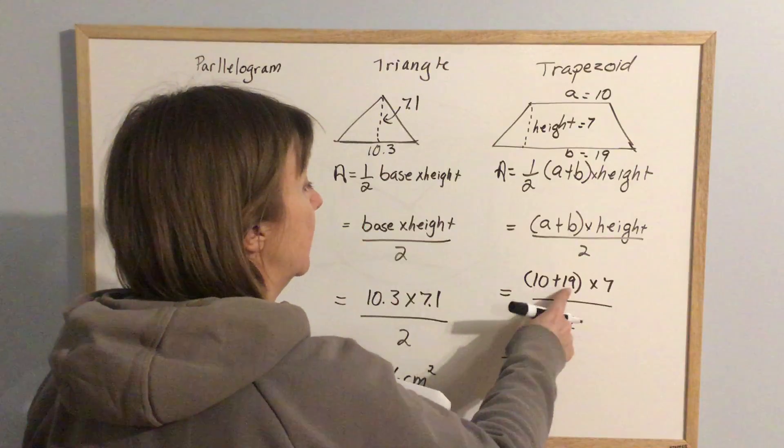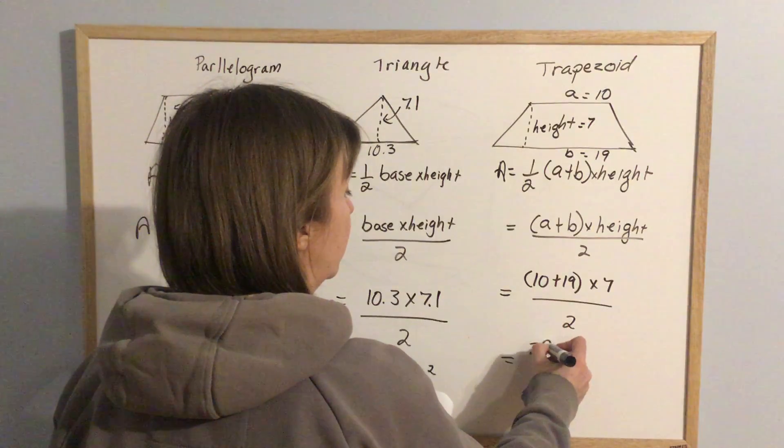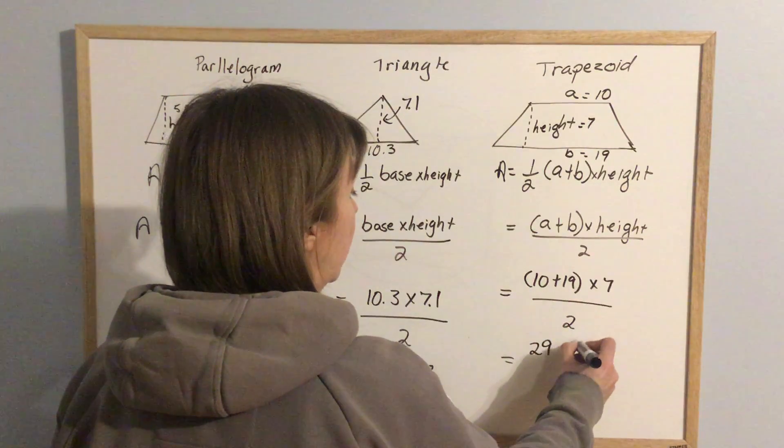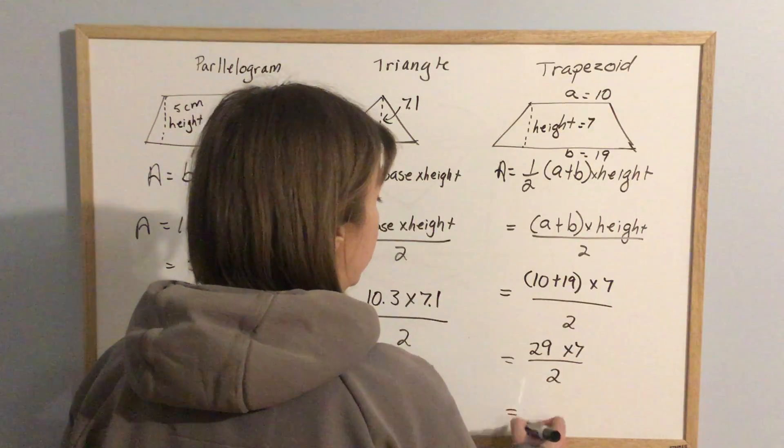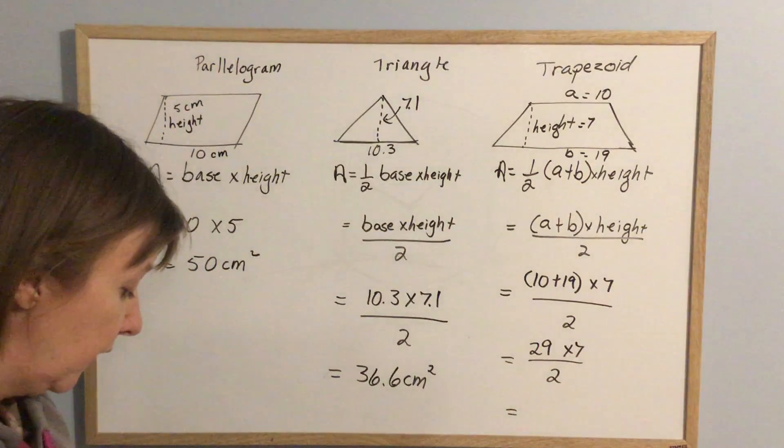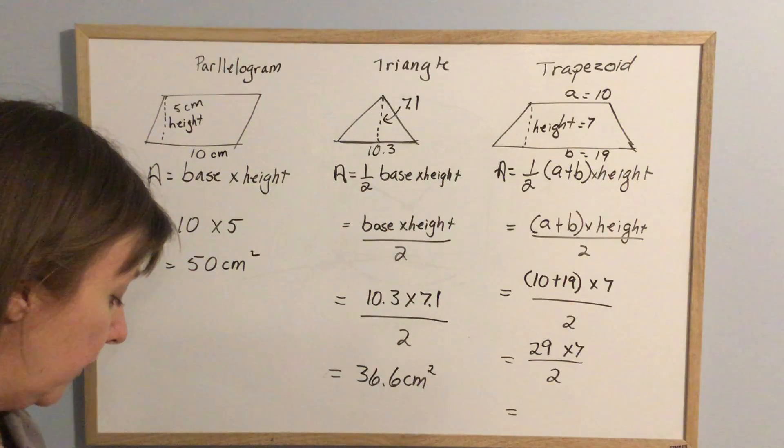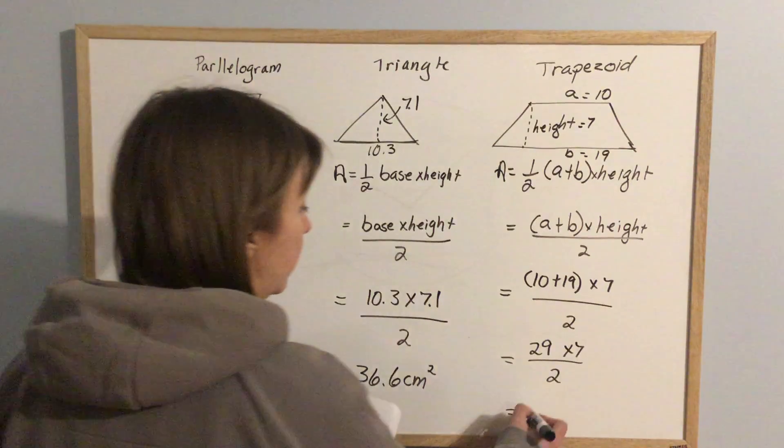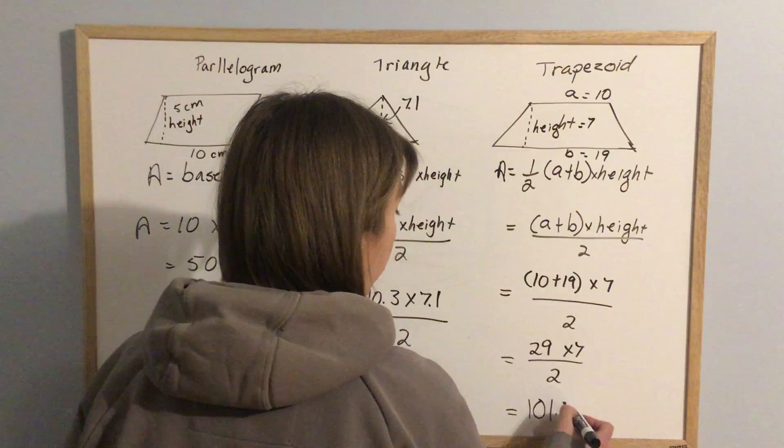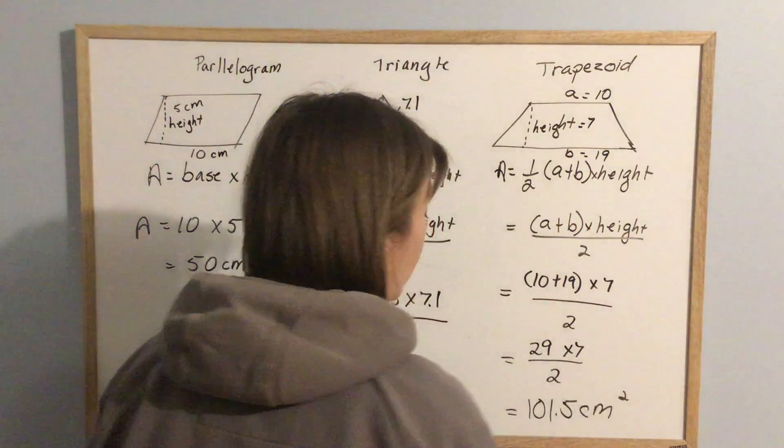10 plus 19 is 29 times 7 and then divide by 2. So 29 times 7 divided by 2 ends up being 101.5 centimeters squared.